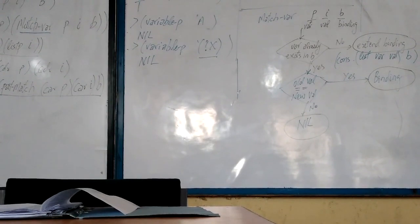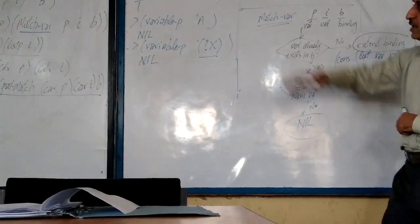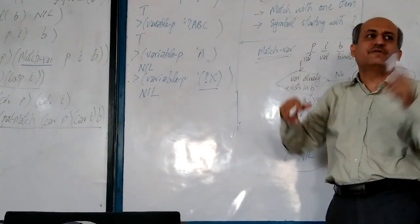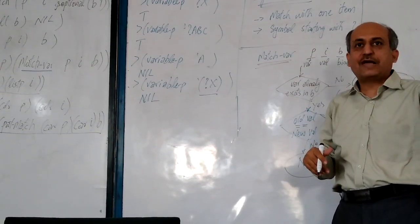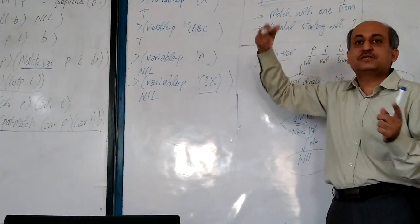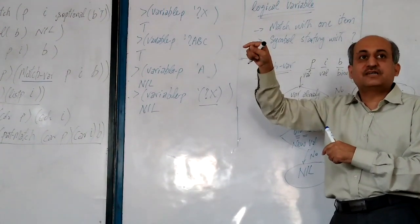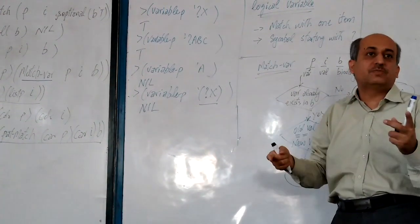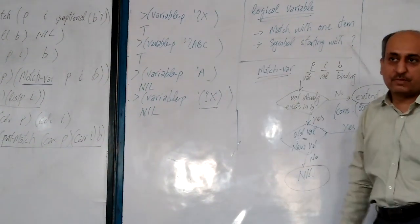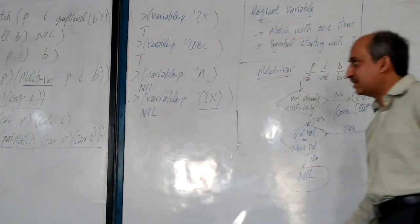So this is the match-variable function — there are basically three possible outputs: one is the extended binding, one is returning the existing binding as it is (still true), and the third is returning nil (false, matching not possible). This is the flowchart of the match-variable function and the behavior of the variable? function. Variable? is just one line — it checks that the argument is a symbol and its first character is a question mark. Note down these points, then we will start tracing the patterns.